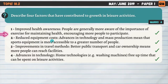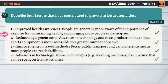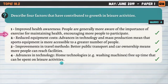Number two: reduced equipment costs. Advances in technology and mass production mean that sports equipment is more accessible and cheaper to a greater number of people. Number three: improvements in travel methods. Better public transport and car ownership means more people can reach facilities — previously, fewer car owners and poorer public transport limited access to distant facilities. And finally, advances in technology: home technologies such as washing machines and dishwashers free up time that can be spent on leisure activities.